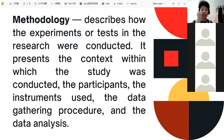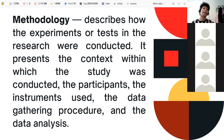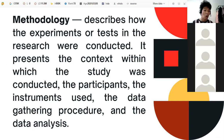Methodology describes how the experiments or tests in the research were conducted. It presents the context of the study, the participants, the instruments used, the data-gathering procedure, and the data analysis. This section presents the method or process you used for your study. It contains the research design, research participants or respondents, research tools or corpora, the research procedure, and how you gathered information for your study.